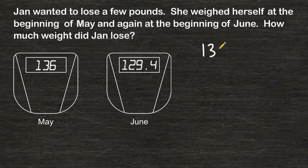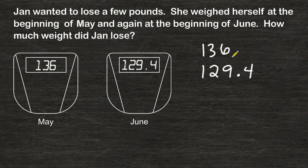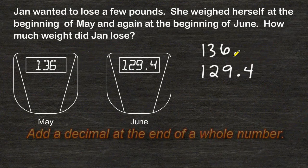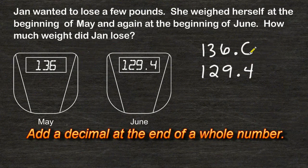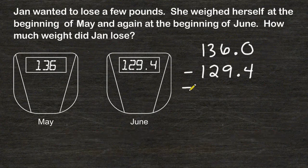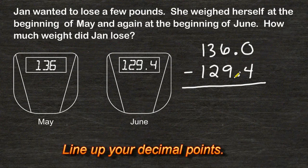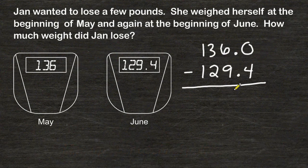What we have to do is set up our problem by writing the whole numbers directly on top of each other. And I'm going to add a decimal at the end of 136 and write a zero in the tenths place. Whenever you add or subtract numbers, you have to make sure that all of the place values are lined up directly on top of each other. A way to force yourself to do this is by lining up the decimal point.